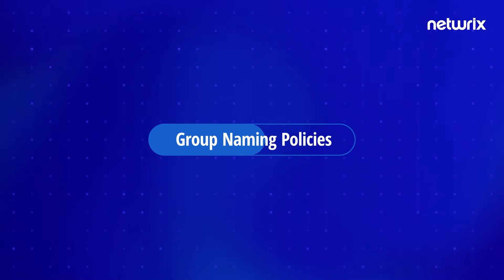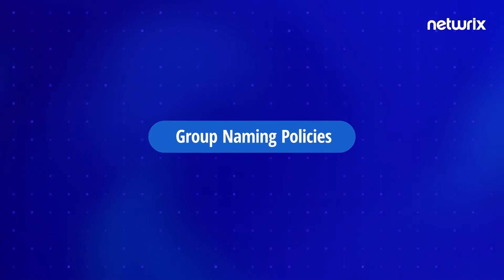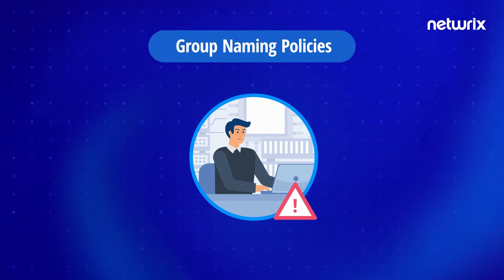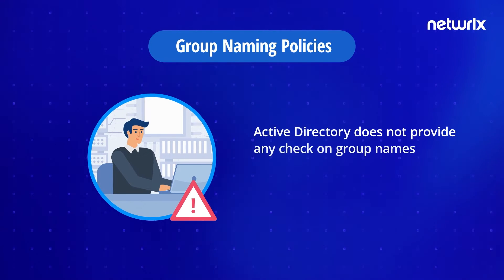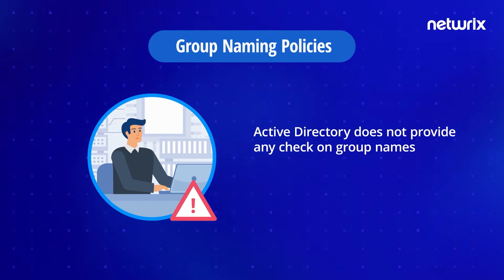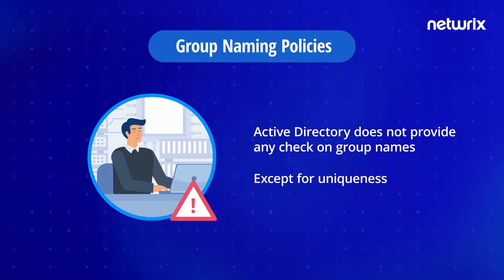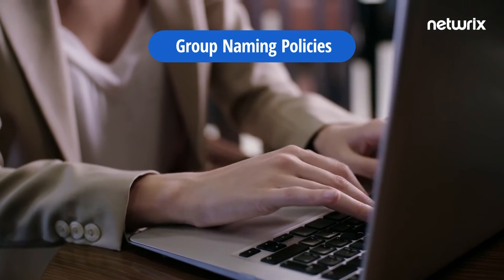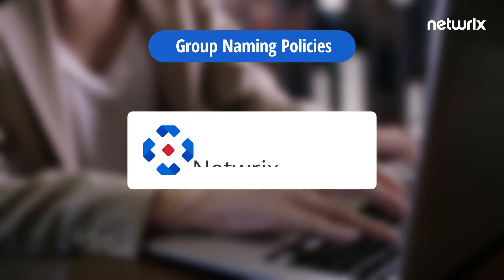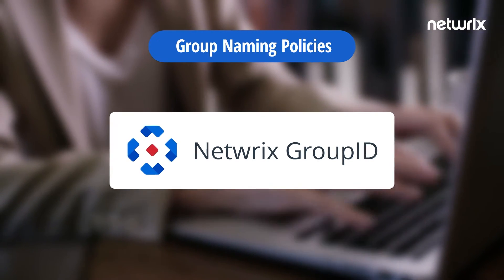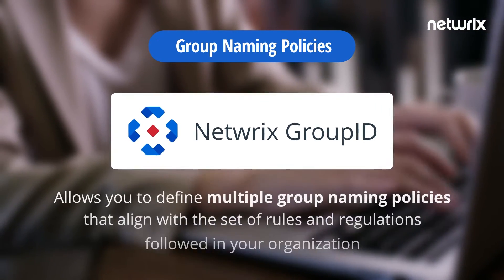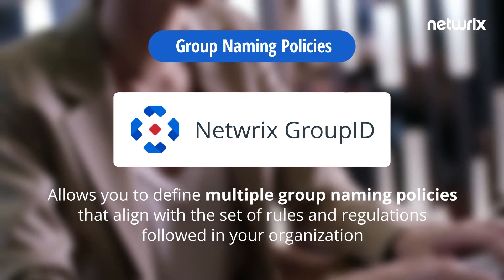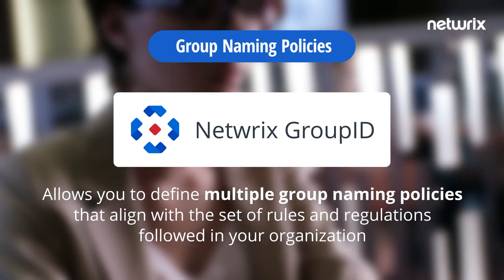When it comes to group naming policies in Active Directory, there are some limitations because Active Directory does not provide any check on group names except for uniqueness. Therefore, to add more group naming controls, you can integrate Group ID with your Active Directory. Group ID allows you to define multiple group naming policies that align with a set of rules and regulations followed in your organization.